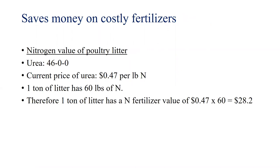Poultry litter has three main plant nutrients: nitrogen, phosphorus, and potassium. Let's first calculate the nitrogen value. The most common source of nitrogen is urea, and the current price of urea is around 47 cents per pound of nitrogen. One ton of chicken litter has 60 pounds of nitrogen, therefore one ton of litter has a nitrogen fertilizer value of around $28.20.